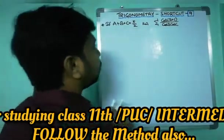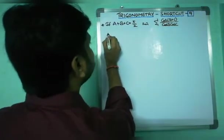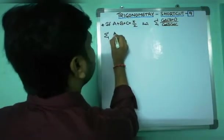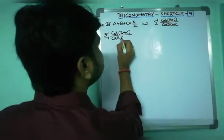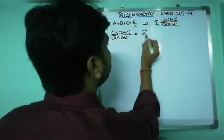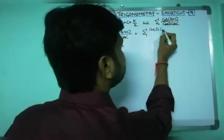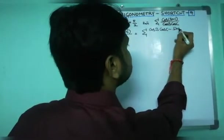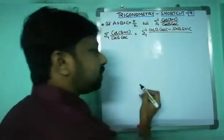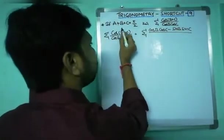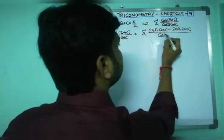So, how are you going to simplify this kind of question? Sigma cos(b+c) divided by cos b · cos c equals sigma. Cos(b+c) can be written using the formula as cos b · cos c minus sin b · sin c, because cos(A+B) = cos A · cos B minus sin A · sin B. Here instead of A we have b, and instead of B we have c. The denominator is cos b · cos c.